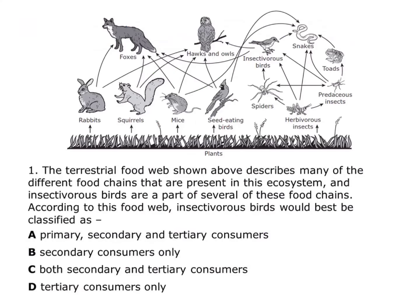So let's go through a couple of practice problems just to make sure you understand. The terrestrial food web shown above describes many of the different food chains present in this ecosystem, and insectivorous birds are part of several of these food chains. According to this food web, insectivorous birds would best be classified as... First, let's figure out what we're looking for. I need to know about insectivorous birds, so I'm going to identify all the different trophic levels that organism is a part of.